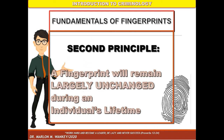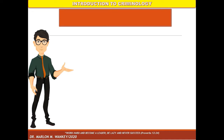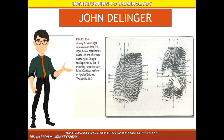The second principle: a fingerprint will remain largely unchanged during an individual's lifetime. No matter how you try to remove the outer layer of the skin of your finger, the ridge will still restore. There was a notorious gangster and police character who attempted to erase his fingerprints by burning with acid, but as time went by, the ridges were again restored to their natural feature. This person is none other than John Dillinger.